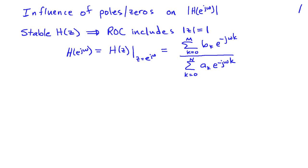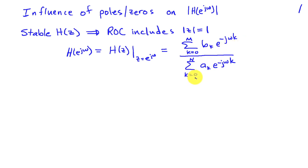We know that if our system is stable, then the region of convergence is going to include the magnitude z equals 1, or the unit circle, so I can obtain the frequency response magnitude from the Z-transform by substituting z with e^{jω}. So my frequency response for a system described by a linear constant coefficient difference equation is just the sum k equals zero to M of b_k e^{-jωk} divided by the sum k equals zero to N of a_k e^{-jωk}.